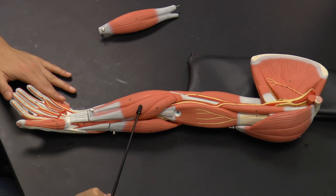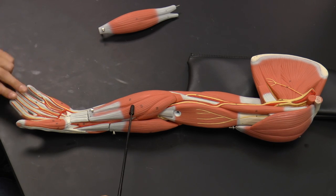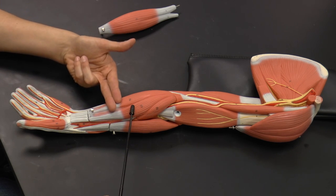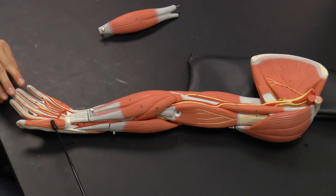I know that that's the flexor carpi radialis because it's on the forearm, so when it contracts it's going to bring my fingers closer to my forearm, basically making a fist. And it's on the radial side, because here's my thumb. So there's my flexor carpi radialis.